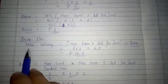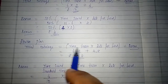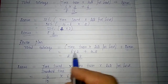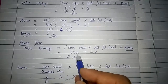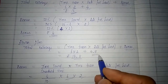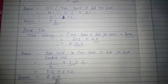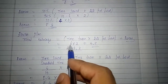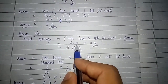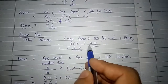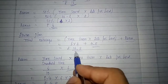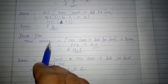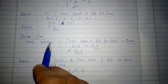Therefore, total earnings of the worker under Rowan's plan: time taken into rate per hour plus bonus — 6 into 2 equals 12 rupees, and 12 plus 4.8 equals Rs. 16.8, which is the total earnings under Rowan's plan.